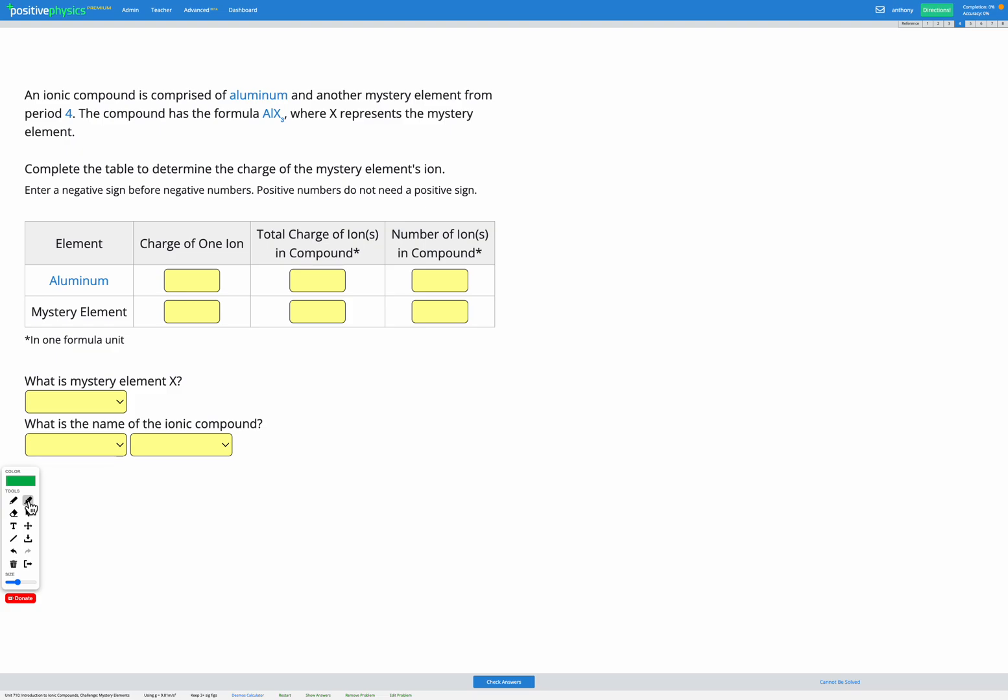In this question, we have an ionic compound and we're told it's comprised of aluminium and a mystery element from period four of the periodic table. And they've given us the formula AlX3, where X represents the mystery element.